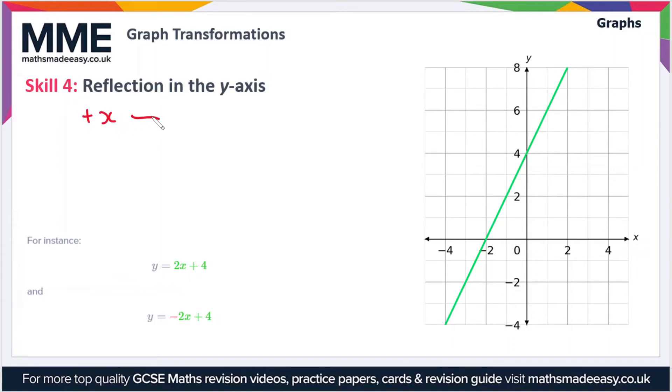So we have positive x values, they become negative x values and we have negative x values which become positive x values. More generally, if we have a function f(x) and we want to reflect it in the y-axis, then we essentially just take f(-x).